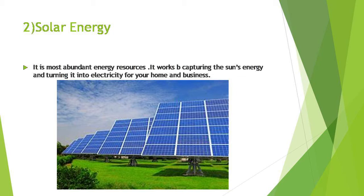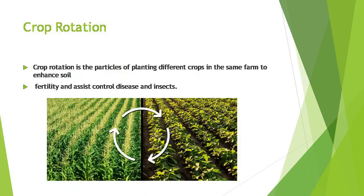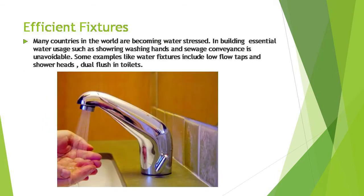Next is green space — a location where plants and animals are left to flourish. Parks, wildlife sanctuaries, and green tree sanctuaries all come under green space. Crop rotation means growing different types of crops in the same land. It is a practice of planting different crops in the same farm to enhance the soil and increase the fertility of the soil.